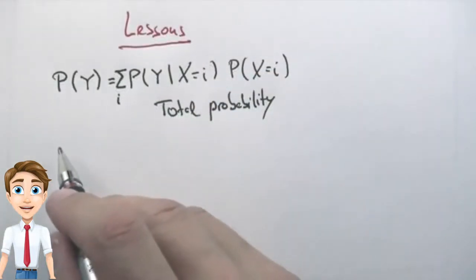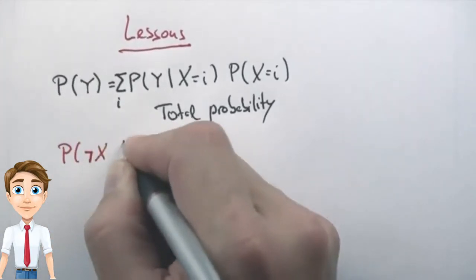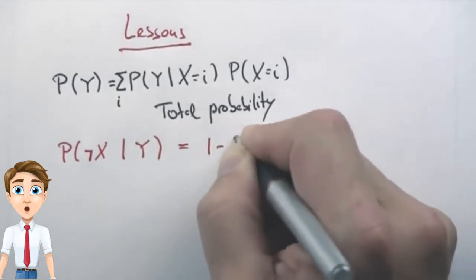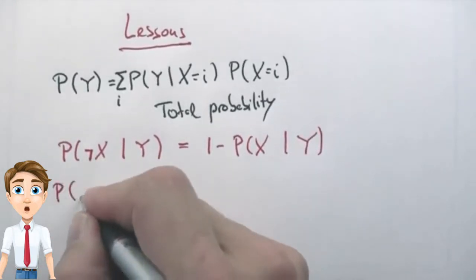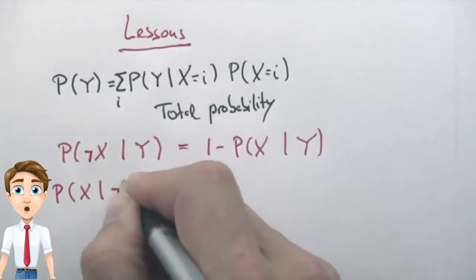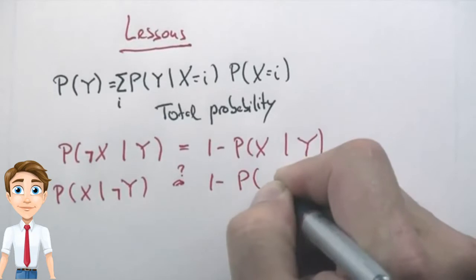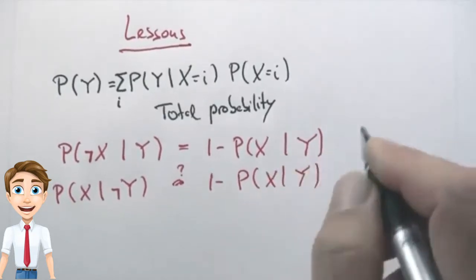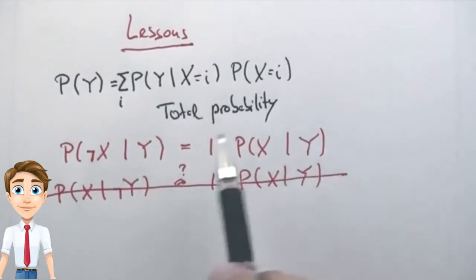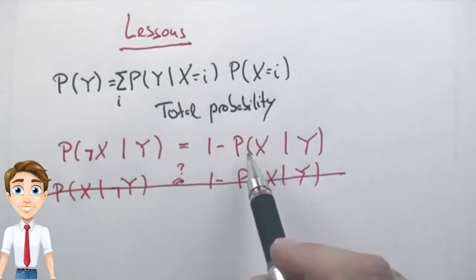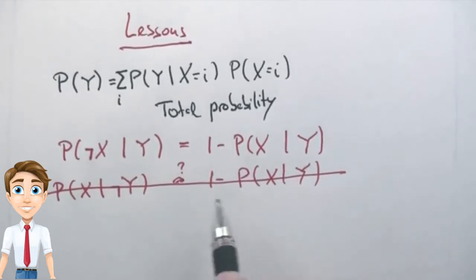The second thing we learned has to do with negation of probabilities. We found that probability of not X given Y is 1 minus probability of X given Y. Now you might be tempted to say what about the probability of X given not Y? Is this the same as 1 minus probability of X given Y? And the answer is absolutely no. If you condition on something that has a certain probability value, you can take the event you're looking at and negate this, but you can never negate your condition variable and assume these values add up to 1.